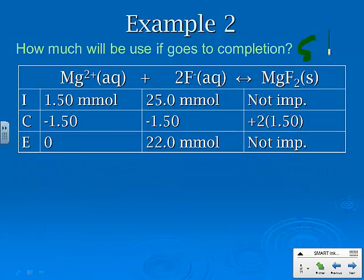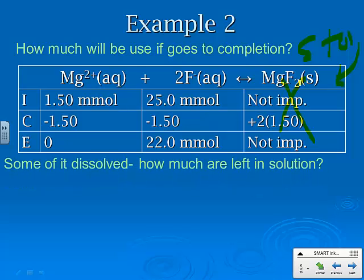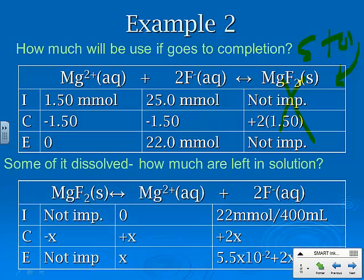How much will be used if it goes to completion? Well, first of all, here is my stoichiometry chart. We got 1.50 millimoles that came from the initial concentration times the initial volume. We've got 25.0 millimoles, and this one doesn't count. The reason it doesn't count is because it's solid. So some of it will dissolve, how much is left in solution. This is the next thing that we have to figure out. Now we go to the ice table.